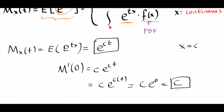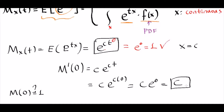So the expectation of a constant equals itself, which is expected. Let's also test if M of zero equals one. Our moment generating function is e to the ct, and if we plug in zero we obtain e to the zero, which equals one — so that is correct as well. The moment generating function of a constant is e to the constant times t, and the expectation of a constant equals that constant.